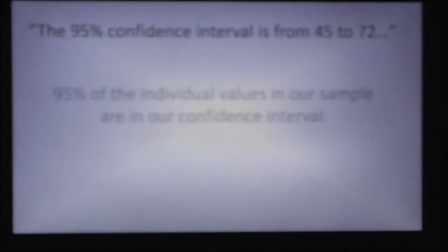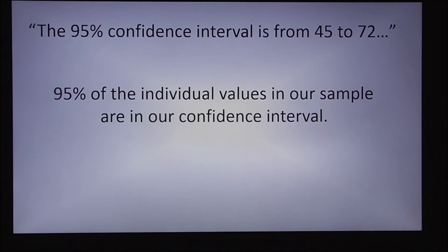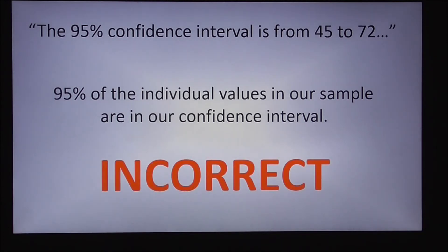Next example. 95% of the individual values in our sample are in our confidence interval. Again, same reasoning as on the previous slide. This is a confidence interval on the mean of the population and not a confidence interval on the individual values. So again, this one is also incorrect.